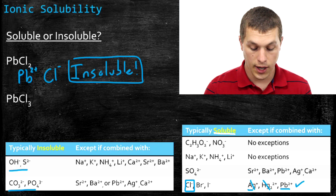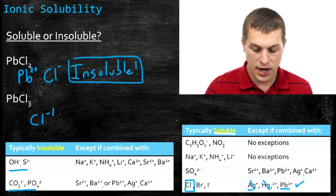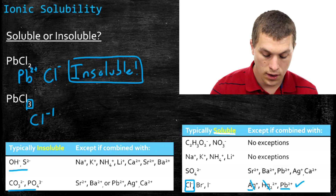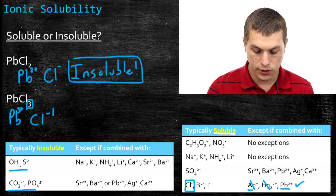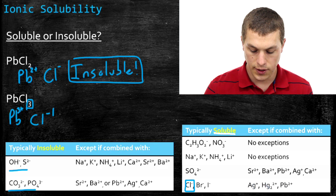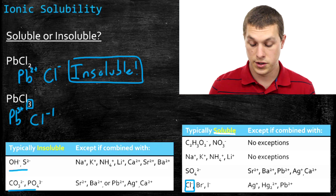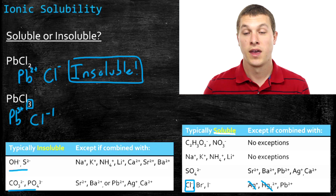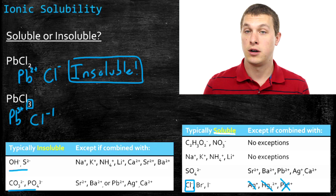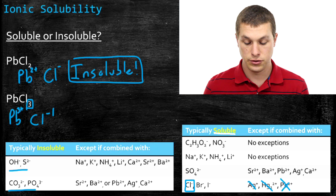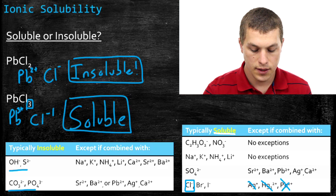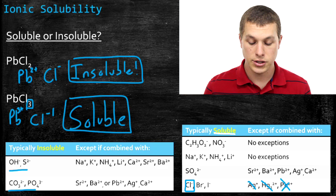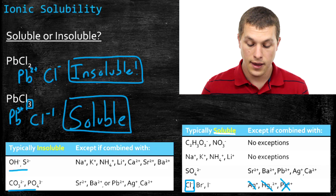Now let's look at lead(III) chloride. Again, chlorine is −1, but since there are three chlorines at −1 each, our lead must be +3. Going back to the tables, we find chlorine in the same spot — generally soluble. Checking the exceptions: it's not paired with Ag⁺, not with Hg²⁺, and not with Pb²⁺. Even though it's paired with lead, the lead is +3, not +2. So lead(III) chloride is actually soluble. This contrast shows that it's important to identify not just what ions you have, but what their charge is.